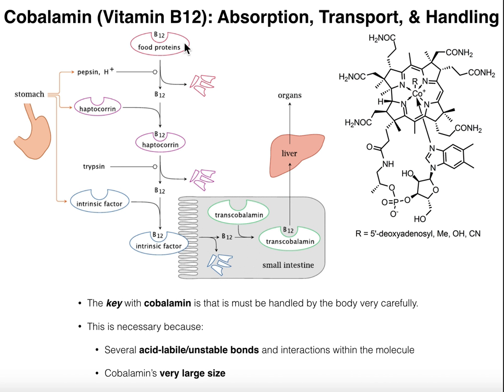Lots of food proteins have B12, especially if you're eating animal products such as beef or chicken — they're going to have a lot of B12 in them. That's the best source of B12: animal proteins. Those proteins are going to contain B12, so when you actually consume these, that food is going to end up in your stomach as part of digestion.